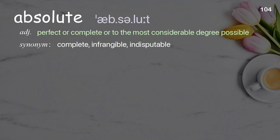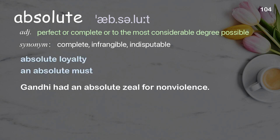Absolute: perfect or complete, or to the most considerable degree possible. Examples: absolute loyalty, an absolute must. Gandhi had an absolute zeal for non-violence.